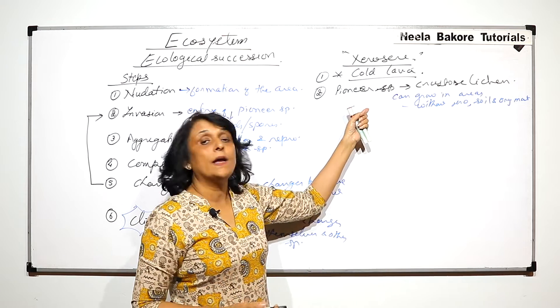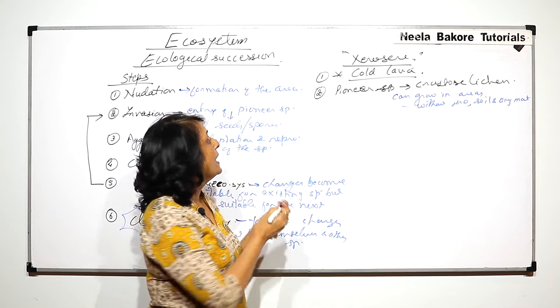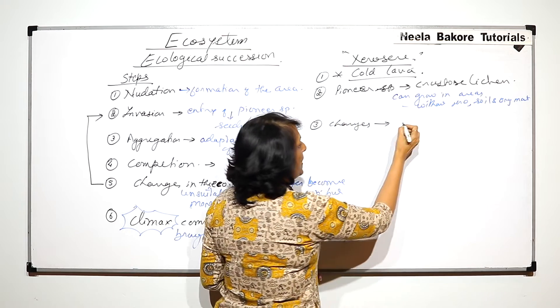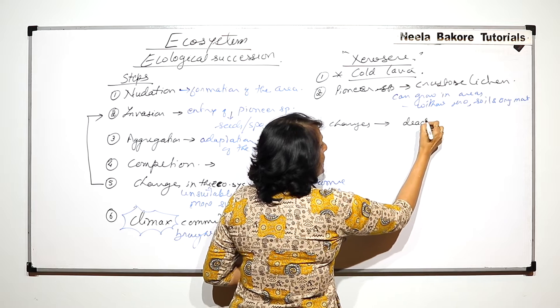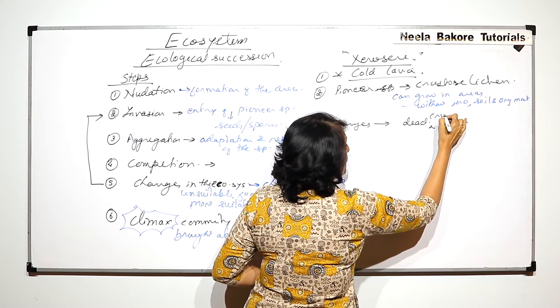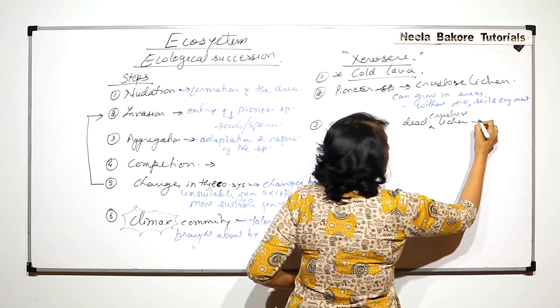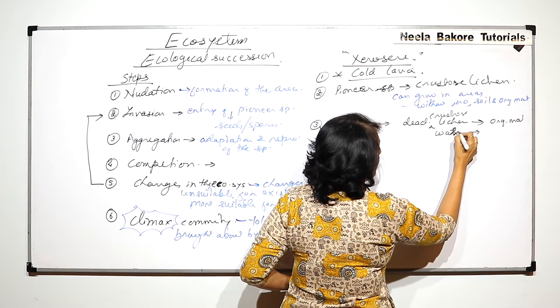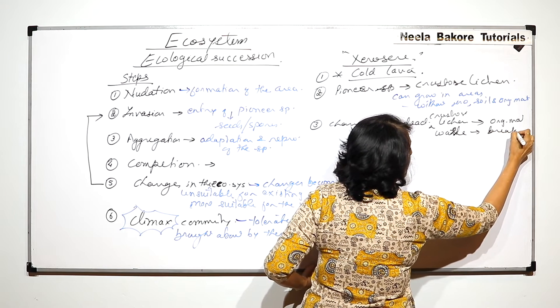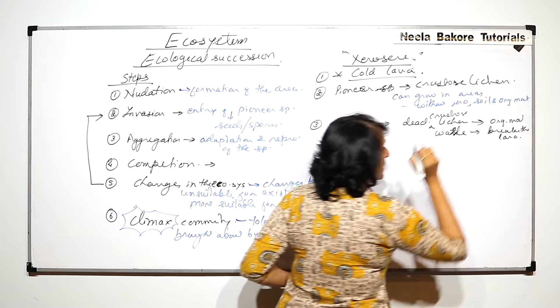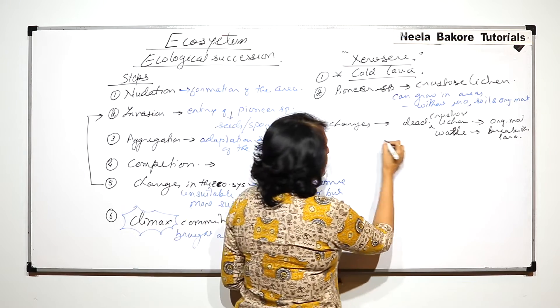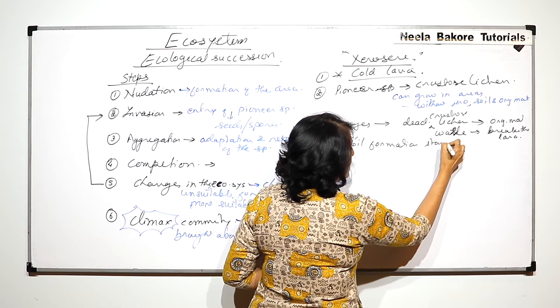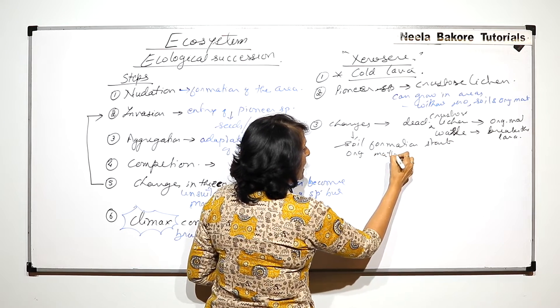What will happen? They grow there, they have invaded, they reproduce, they aggregate and now there will be changes. What are the changes brought about by the crustose lichens? Dead crustose lichens result into organic matter, their waste breaks the lava and soil formation takes place. Here the change is soil formation starts and organic matter accumulates.